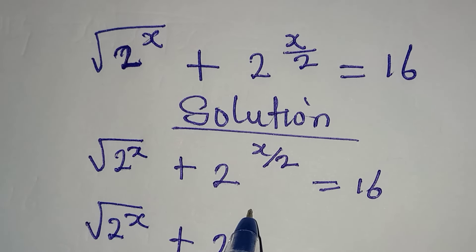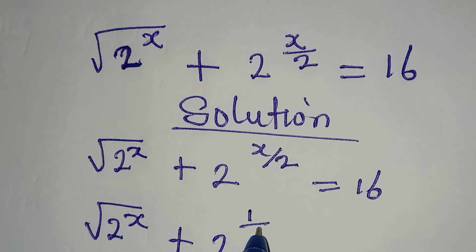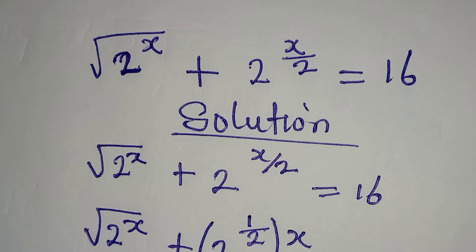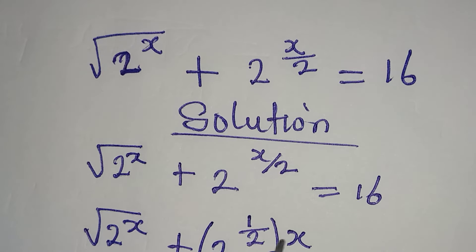Hello everyone. Let's provide the solution to this problem. We have square root of 2 to the power of x plus 2 to the power of x over 2 equal to 16. This is very simple because we know what we are going to do.